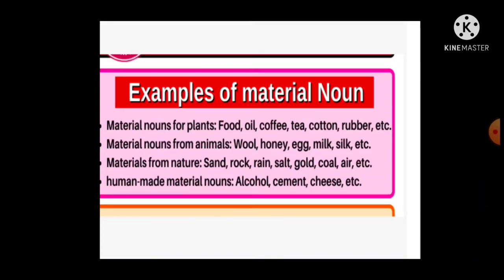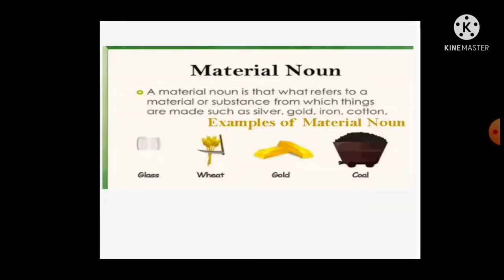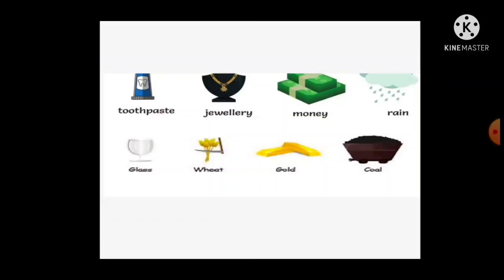Materials from nature: sand, rock, rain, salt, gold, coal, air, etc. Human-made material nouns: alcohol, cement, cheese. Material noun refers to a material or substance from which things are made, such as silver, gold, iron, cotton, toothpaste, jewelry, money, rain, glass, wheat, gold, coal.